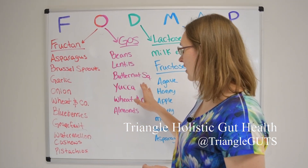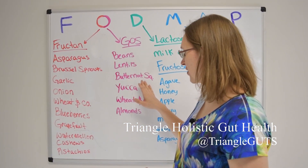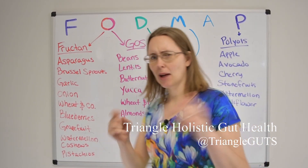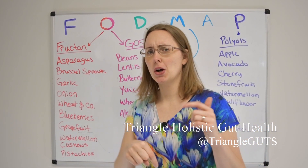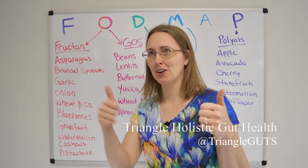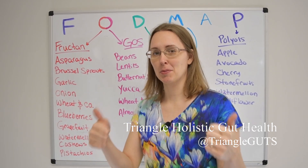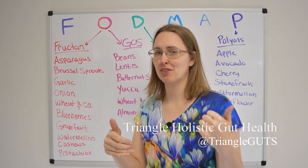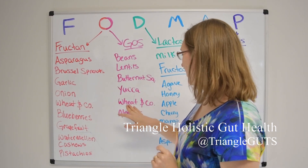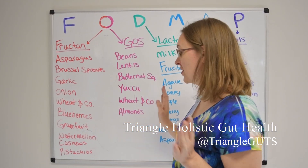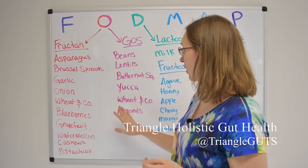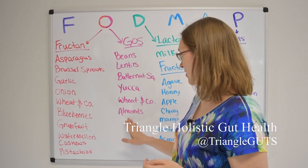Over in the GOS category, we've got things like butternut squash, yucca — comment below and let me know, is it yucca or yucca? I always say yucca but I'm not sure if I'm correct. Also in that category: wheat and company — so barley and rye — and almonds make the list for galactooligosaccharides.